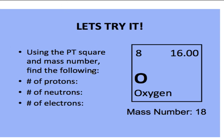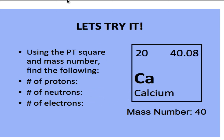On your note sheet, go through and try it out. You have all the information you need: the symbol, the name, the atomic number — everything. I want you to figure out the number of protons, neutrons, and electrons for oxygen, and then do the same thing for a particular atom of calcium.